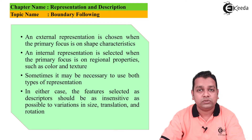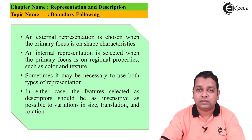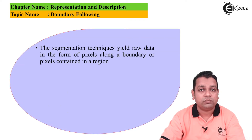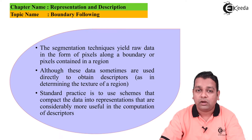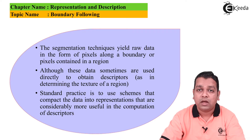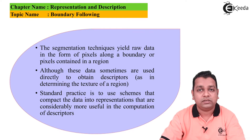Sometimes it may also be necessary to use both types of representation schemes. In either case, the features selected as descriptors should be as insensitive as possible to variations in size, translation, and rotation. Segmentation techniques yield raw data in the form of pixels along a boundary or pixels contained in a region. Although these data are sometimes used directly to obtain descriptors, the standard practice is to use schemes that compact the data into representations considerably more useful for computation of descriptors.